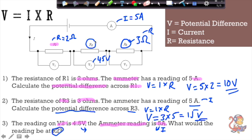So I rearrange my equation by dividing both sides by I. So R equals V divided by I, and then I put my numbers in. R equals 4.5 divided by 5, which equals 0.9 ohms.